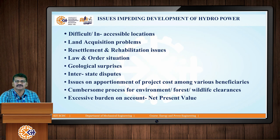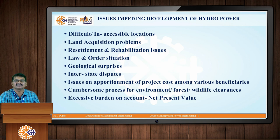The issues while developing a hydroelectric power plant are shown here. When developing a hydroelectric power plant, there is very less pollution, so we are focusing on that. But there are some difficulties. The first difficulty is the inaccessible location, because the location for this hydroelectric power plant is always away from the city.